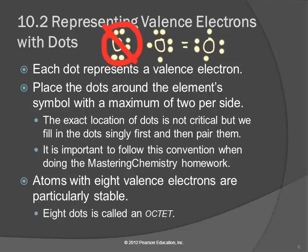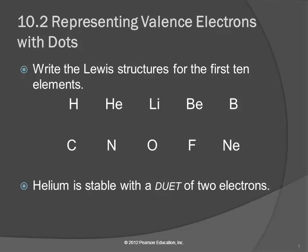Atoms with eight valence electrons are particularly stable — those are the noble gases. We call eight dots an octet. If you're singing in a quartet there's four people; an octet is eight people. An octet of electrons is eight dots on your Lewis structure. So everybody's trying to get eight dots. Let's look at the first elements and draw their Lewis structures.